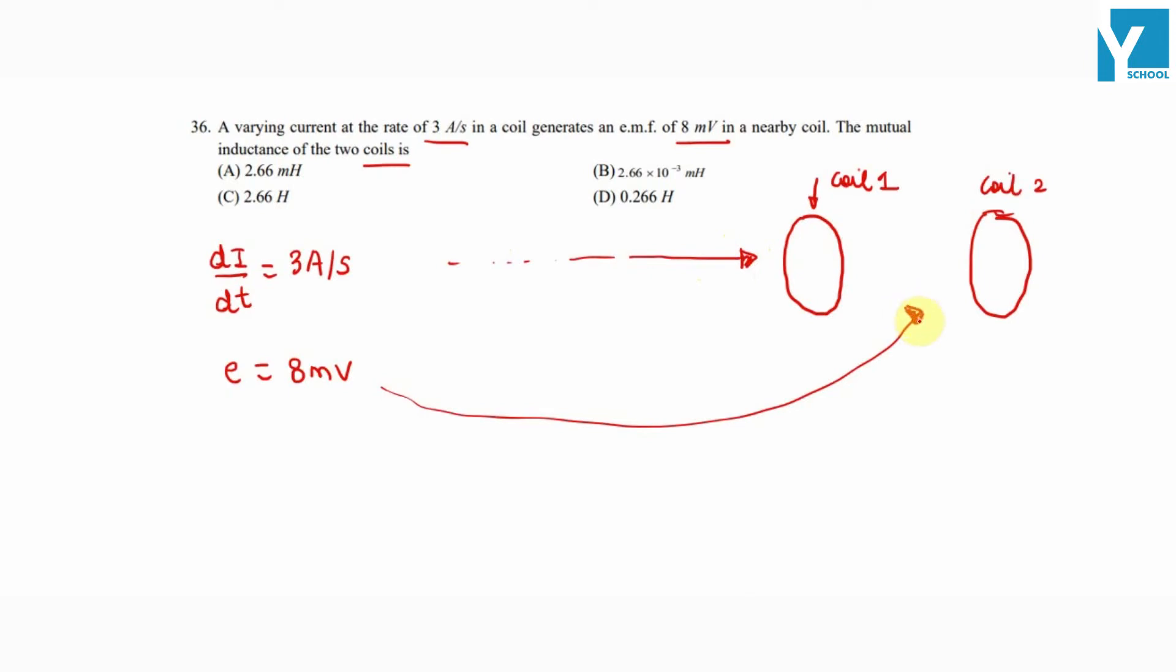The second coil has an emf of 8 millivolts induced due to mutual induction. We have to find the coefficient of mutual induction. We know e equals M times di/dt - we've studied this formula in theory.